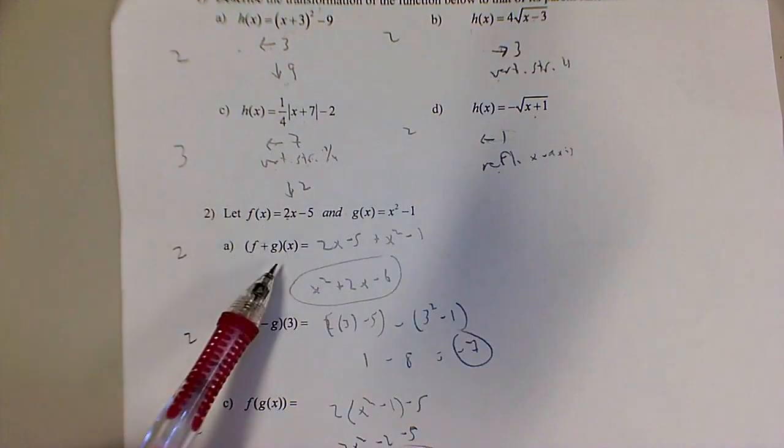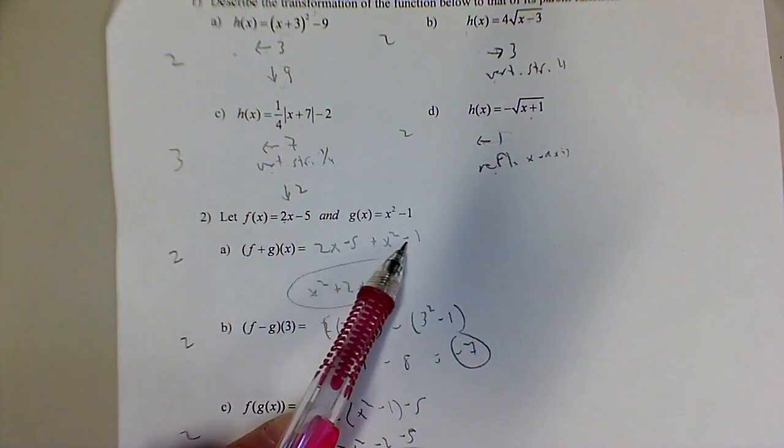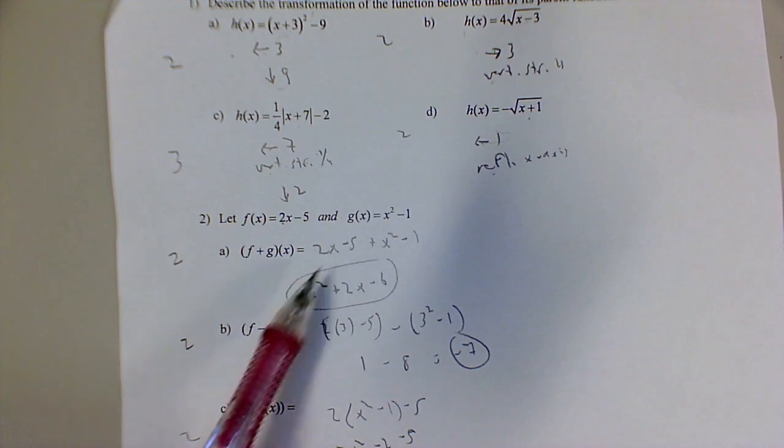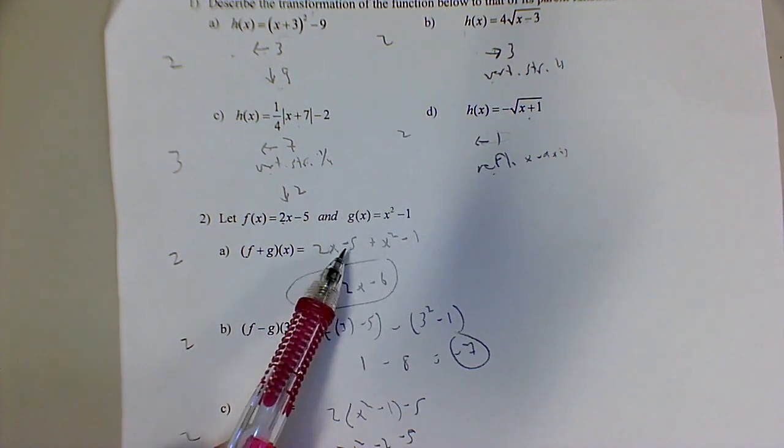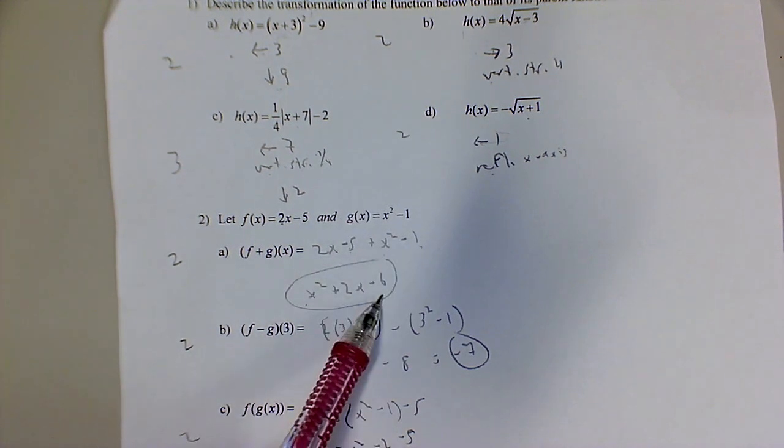So, when you're adding these, it's pretty straightforward. 2x minus 5 plus, well it doesn't matter about parentheses, so you have an x-squared, plus 2x, negative 5 plus negative 1 is negative 6.